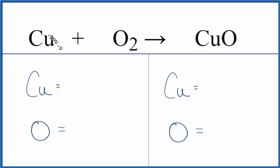Let's count the atoms up on each side. This is just copper metal by itself. We have one of those. We have two oxygen atoms.